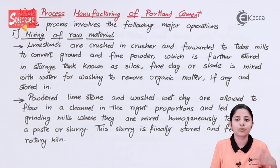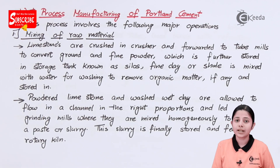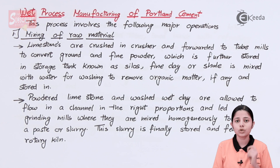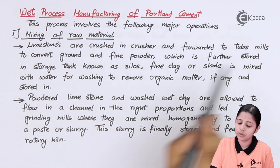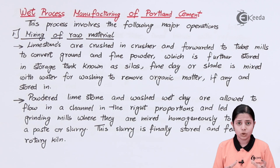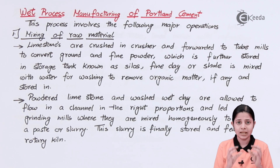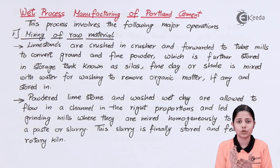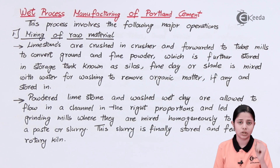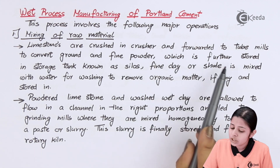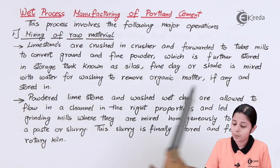The first operation is mixing of raw materials. The first and most important raw material is limestone. Limestones are crushed in a crusher and forwarded to tube mills to convert them into fine ground powder. Limestones come in the form of big rocks, so first they are crushed into small pieces, then these small pieces are fed into tube mills and further crushed into very fine powder, which is stored in storage tanks known as silos.